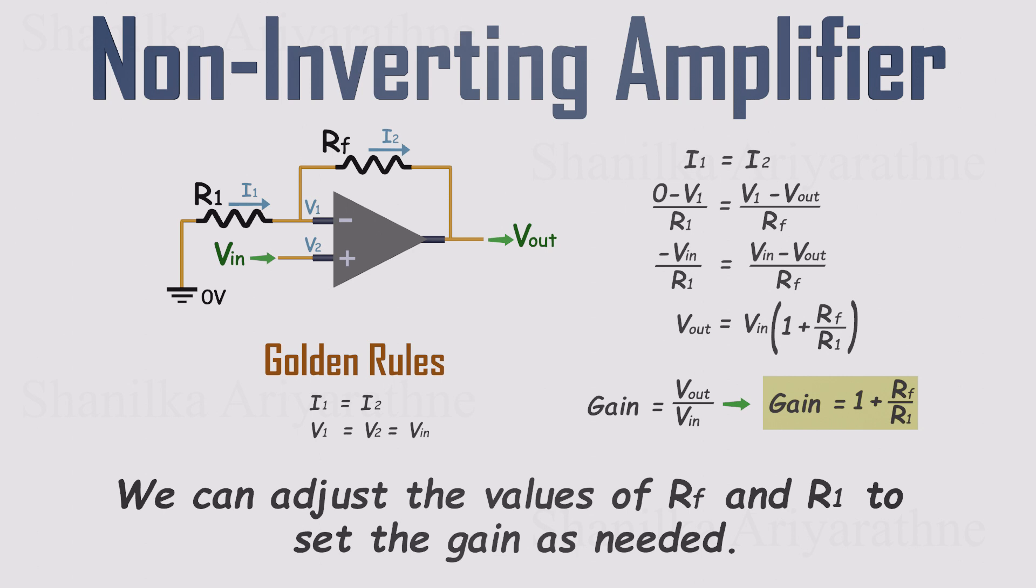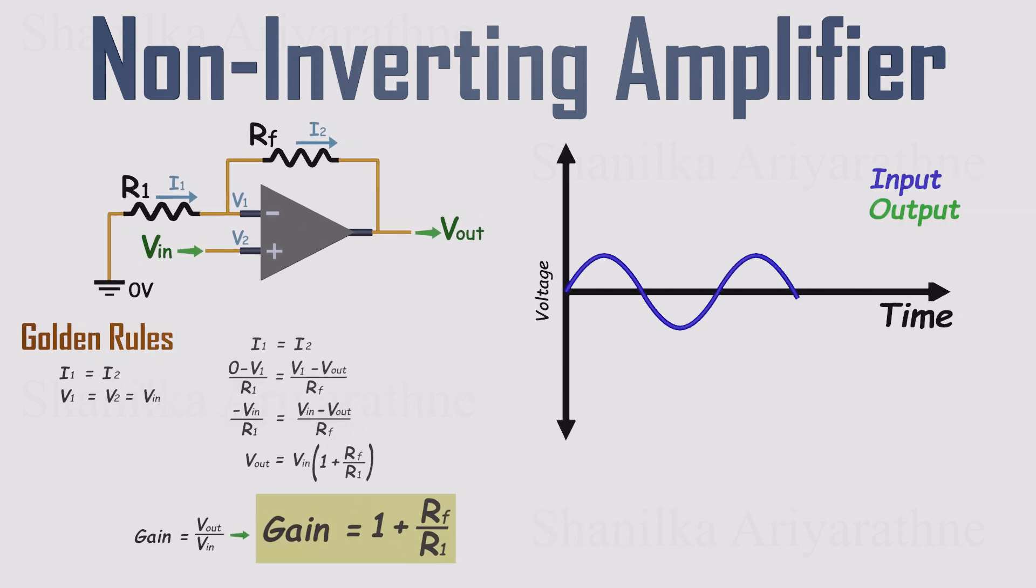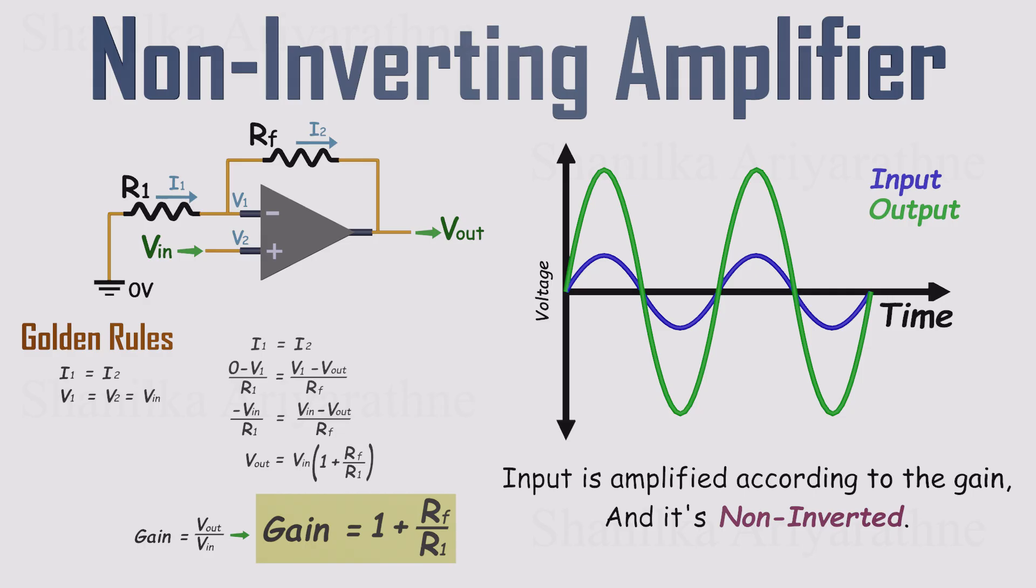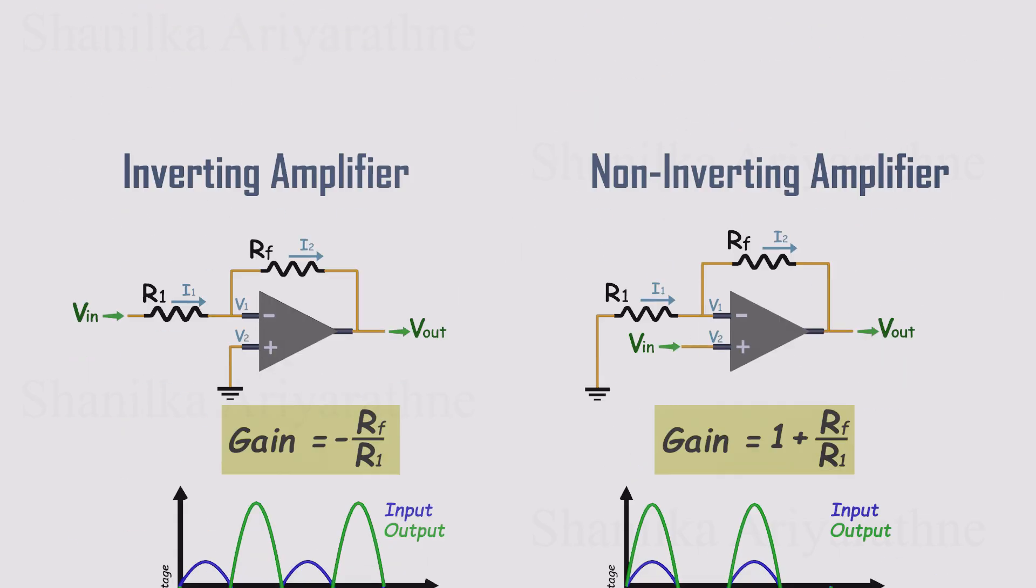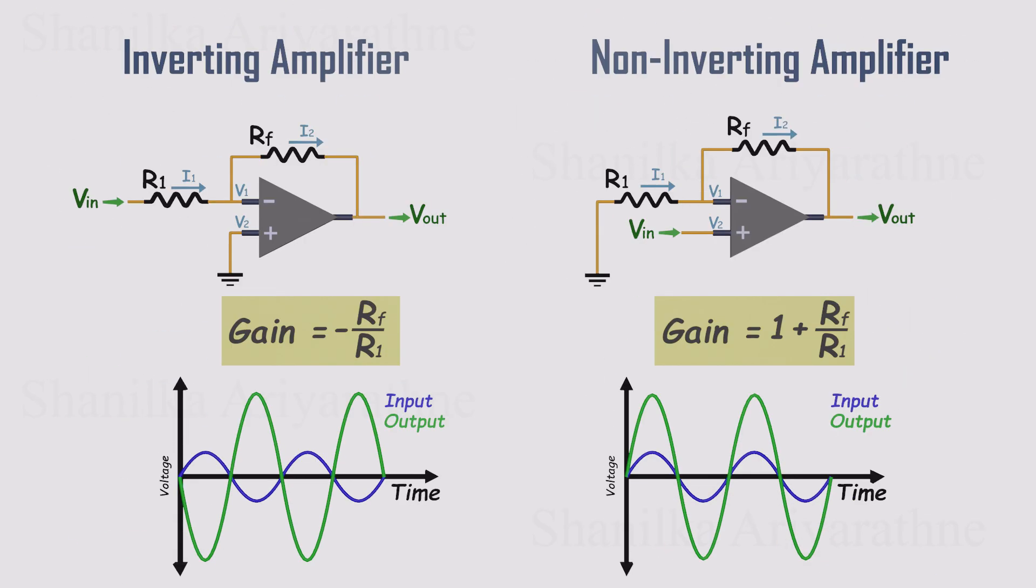And here's the key difference. If we plot the input and output, they're in the same phase. The output is amplified, but not flipped. That's why it's called a non-inverting amplifier. Both inverting and non-inverting amplifiers are really useful. You just need to remember their different circuit setups and how the output behaves when you use them in a project.